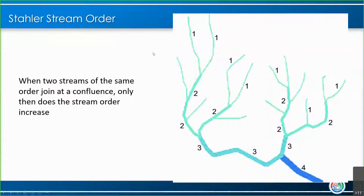Next is how we classify the size of streams — this is called Strahler stream order. Basically, when two streams of the same order join together at what's called the confluence, the stream order increases. You can think of first-order streams as headwater streams — like little seeps in the forest. When two first-order streams come together, that forms a second-order stream. If a second-order stream joins a first-order stream, it still remains second-order. It only changes to third-order when another second-order stream joins.